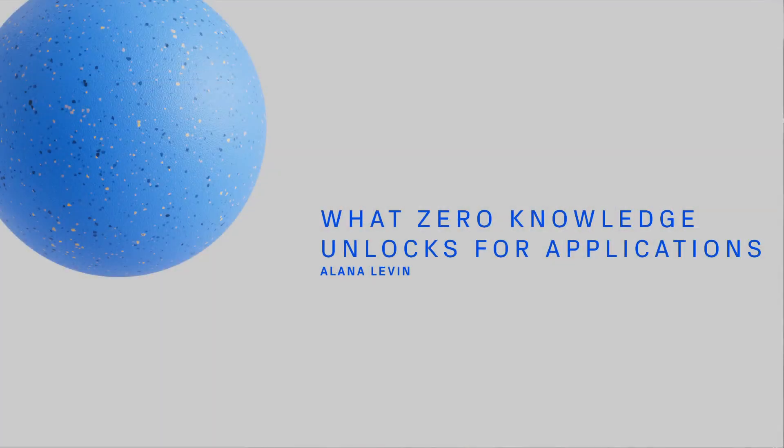As you know, Variant invests across the full stack. As Sam started to allude to, I specifically focus a lot on infrastructure and what it can enable at the application layer. Along those lines, one area that we've been really excited by recently have been advancements in zero-knowledge cryptography, and specifically what types of net new things they enable on-chain. So that's what my talk today will be about: why now, and what we're looking forward to within the realm of ZK-enabled apps.